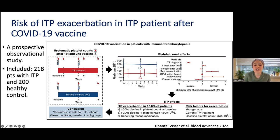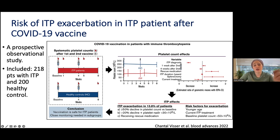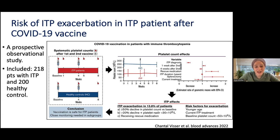Overall, COVID vaccine is safe in ITP patients, similar to other vaccines. There's some association of dropping platelets between other vaccines and ITP as well. The vaccine may cause exacerbation, but mainly in a subset of patients.